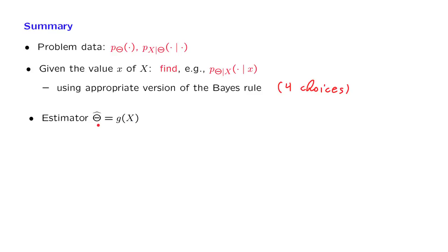But once we obtain a specific value of our random variable, and we apply this particular estimator, then we get the realized value of the estimator. So we apply g now to the lower case x, and this gives us an estimate, which is actually a number.